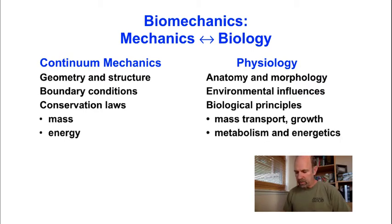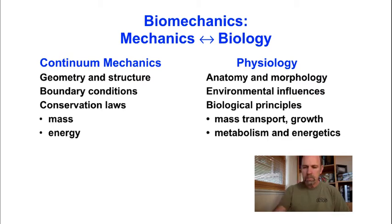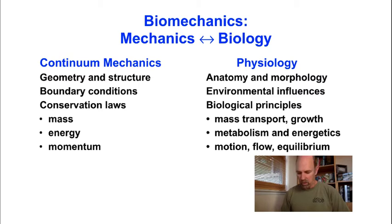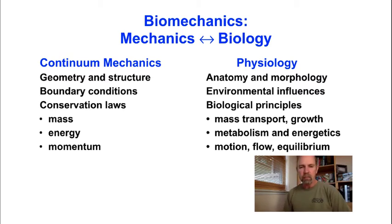Conservation of energy is directly related to energy metabolism and is a major topic in physiology. Conservation of momentum is used to understand motion, flow, and equilibrium of fluid and solid tissues in physiological systems. For example, Poiseuille, for whom the famous law of laminar tube flow was named, was a physiologist who performed experiments on tube flow in 1838 and then did the analysis in 1840 and published the work in 1846.